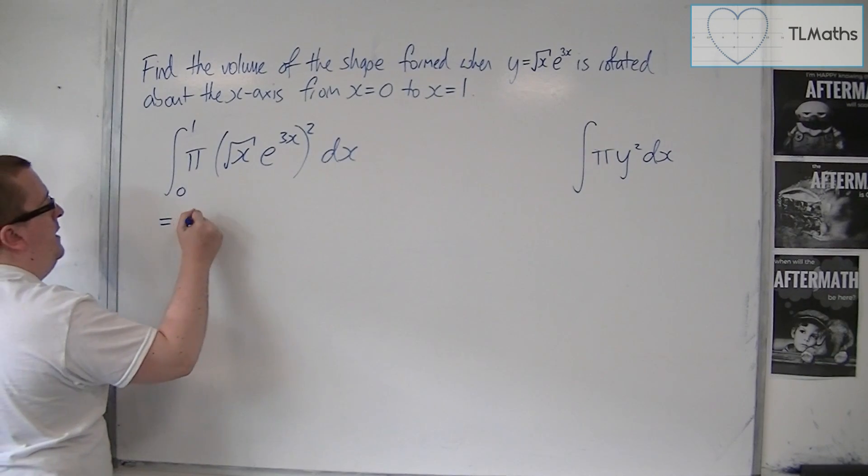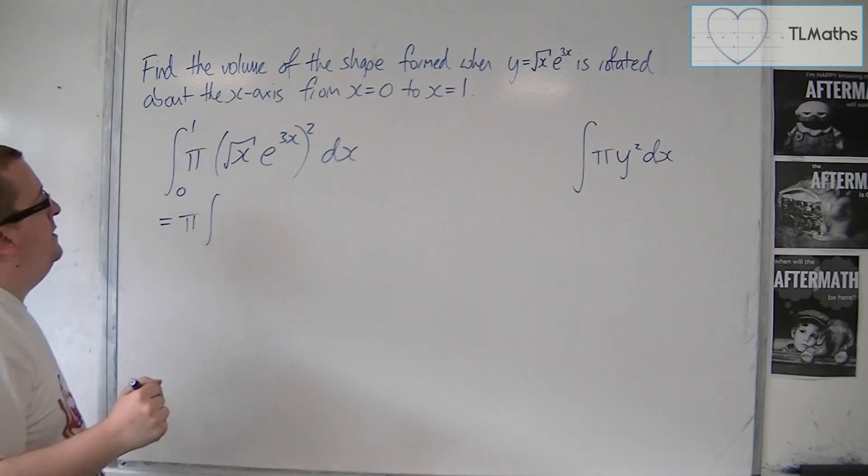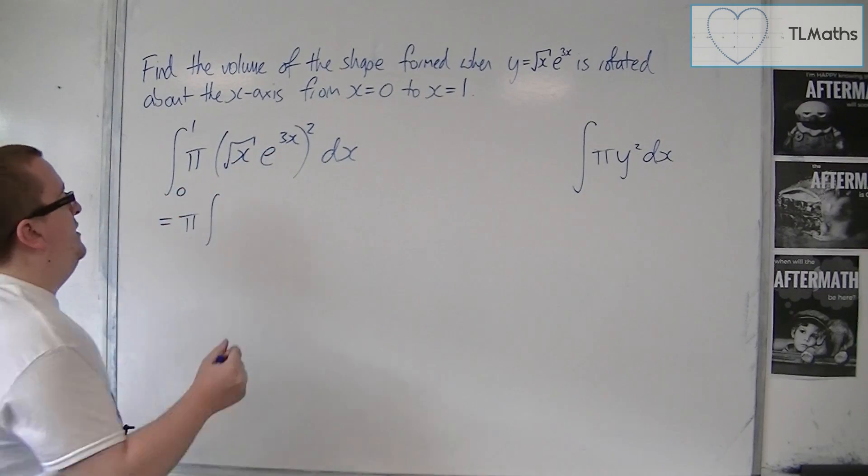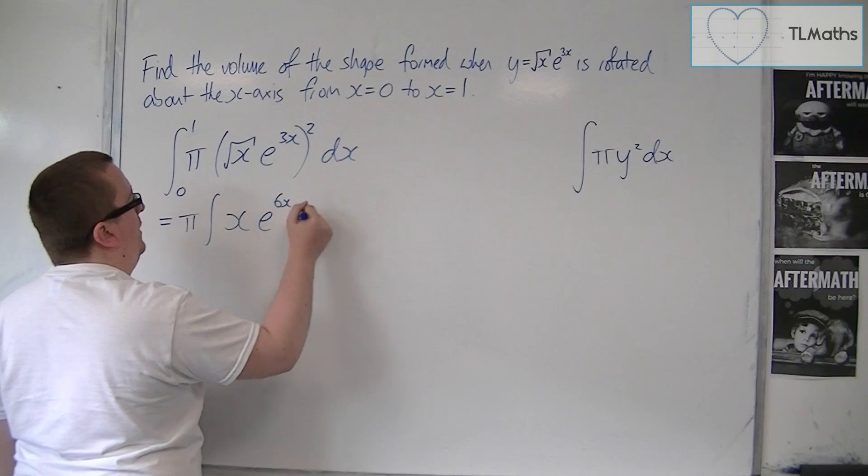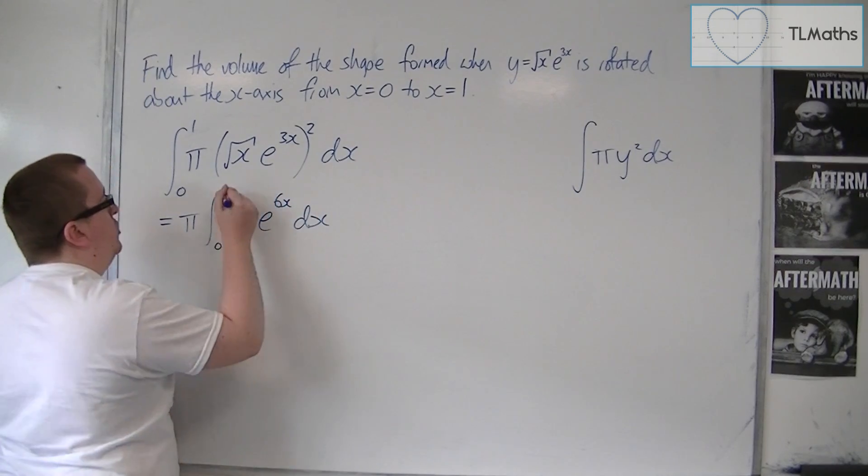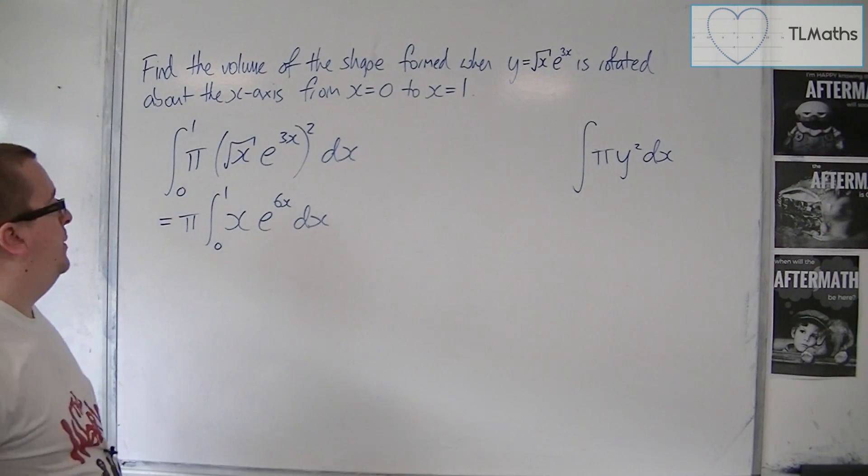Now, I'm going to bring that pi outside of the integral sign. The root x squared is just x, and e to the 3x squared is e to the 6x, and so we're actually evaluating this integral between 0 and 1.